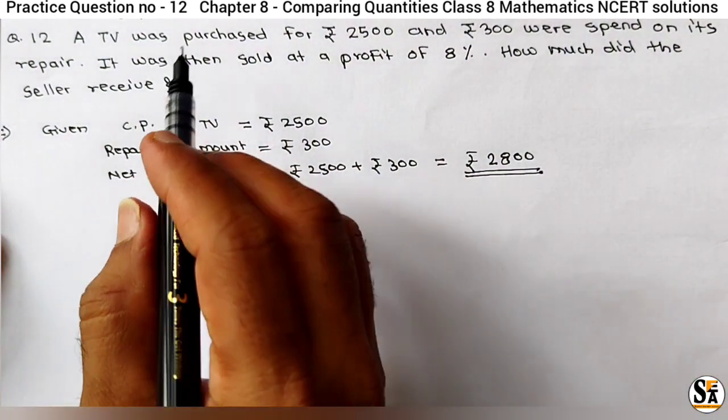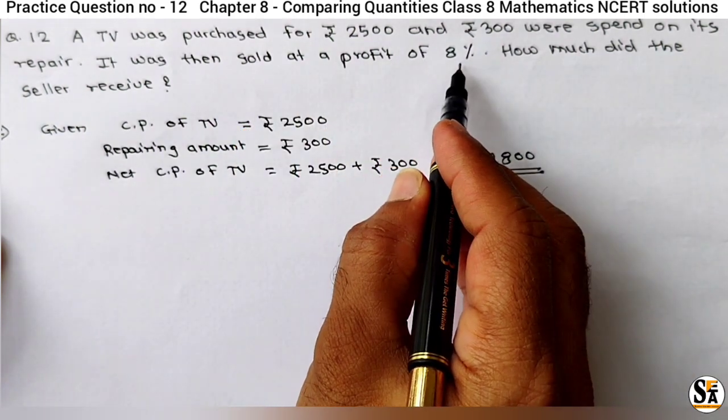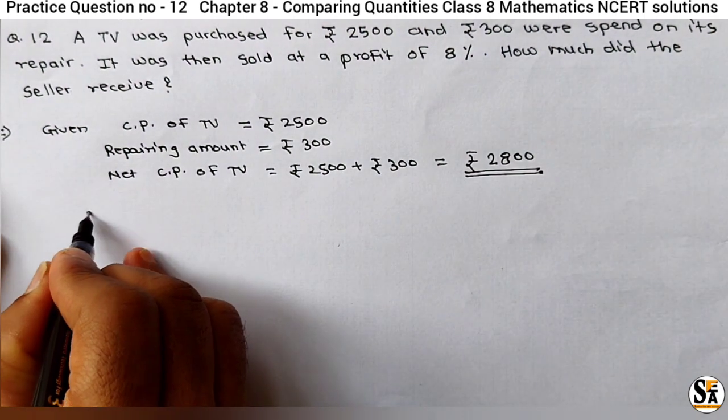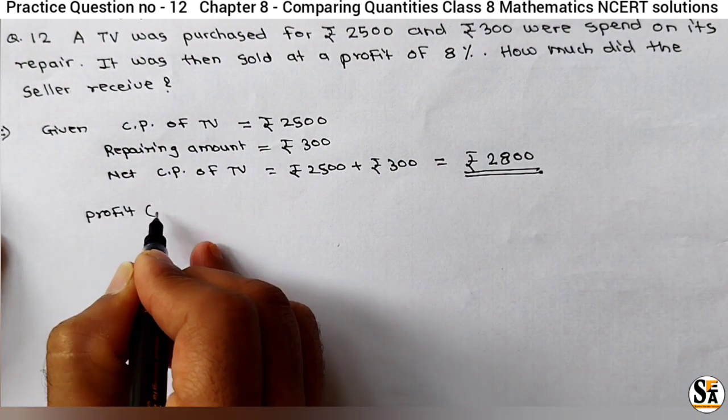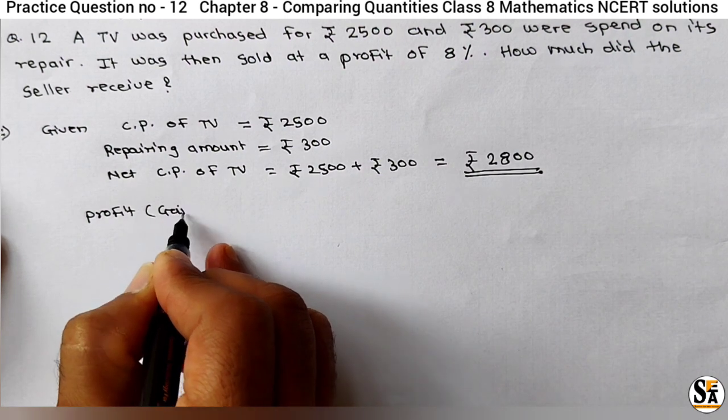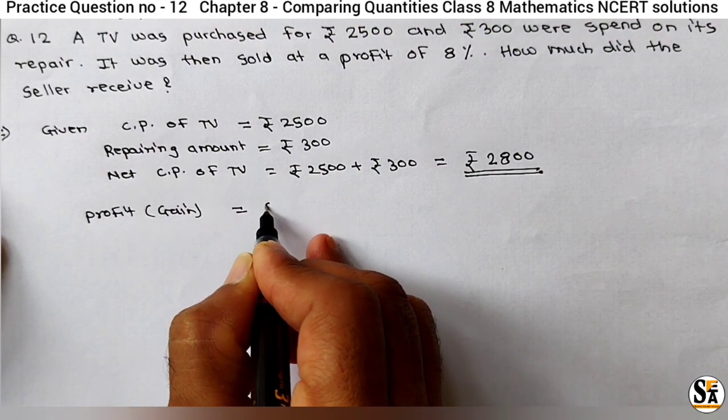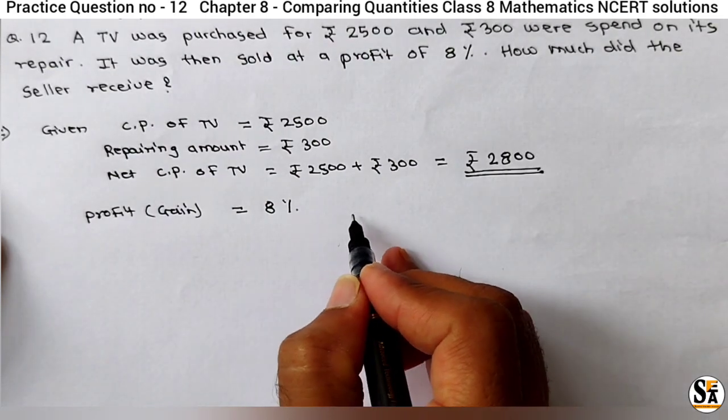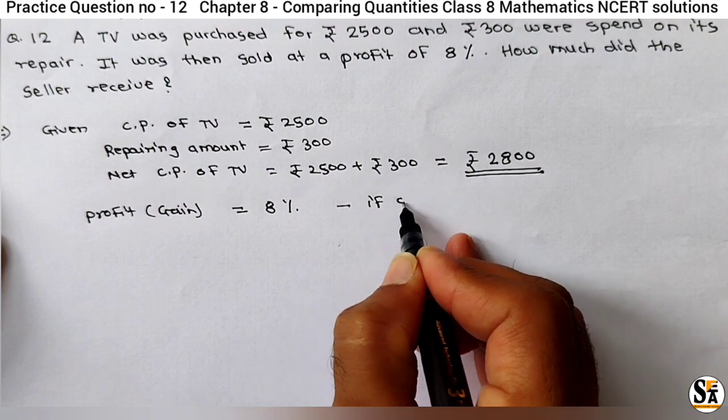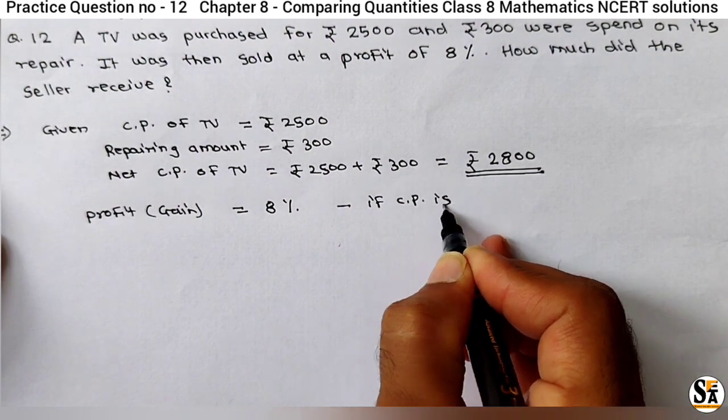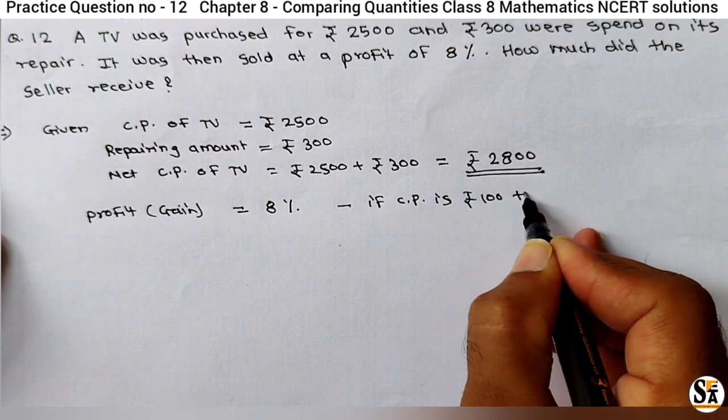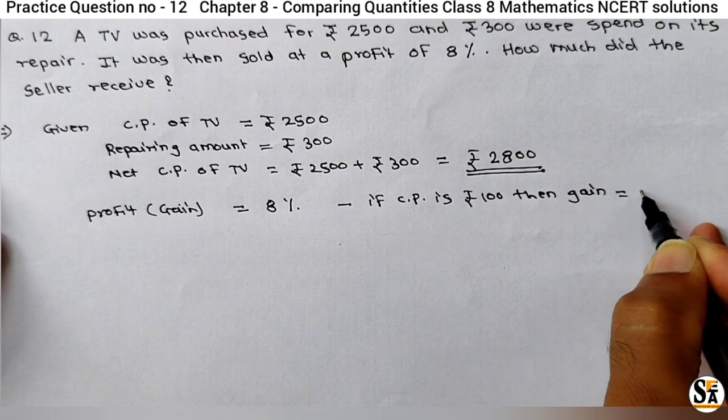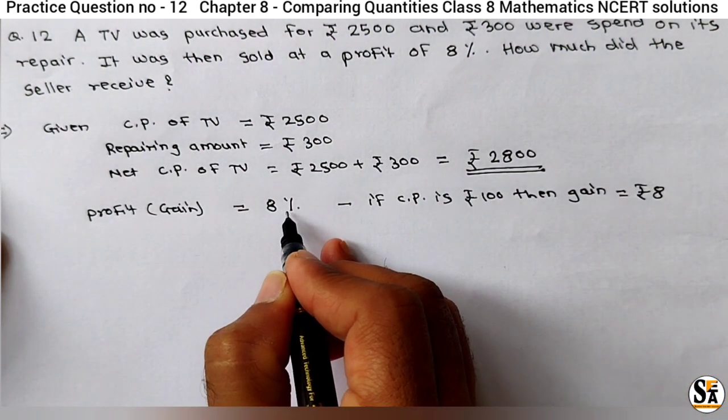Then what is given? It was sold for profit of 8%, means here gain or profit is given in percentage, that is 8%. What is the meaning of 8%? Meaning is if CP is Rs 100, then gain will be Rs 8. That is the meaning of this percentage, 8%.